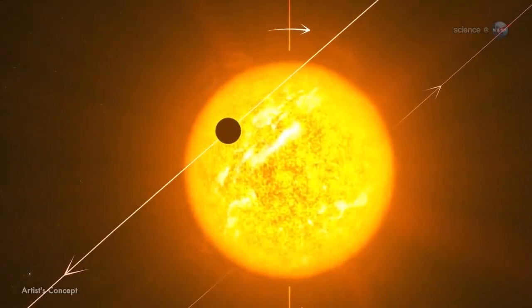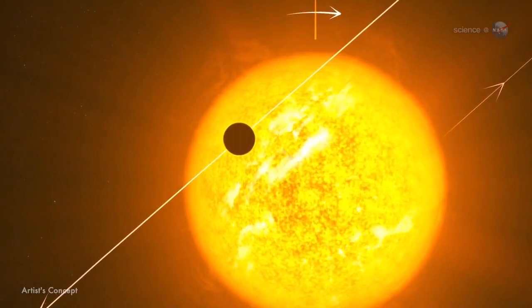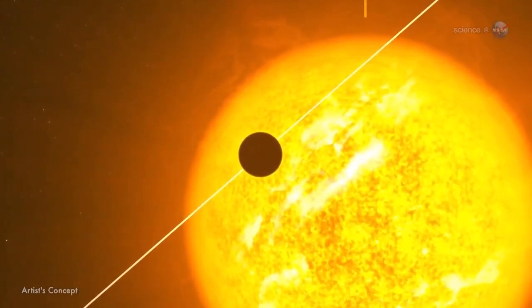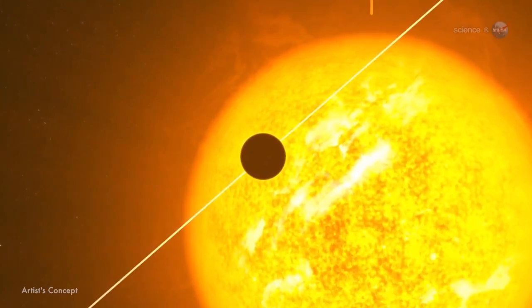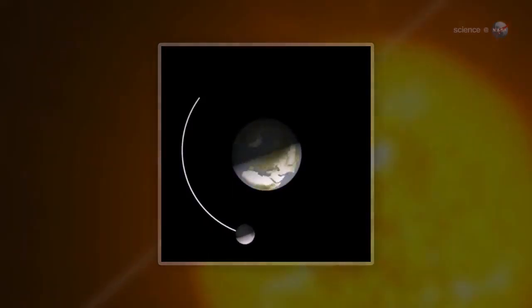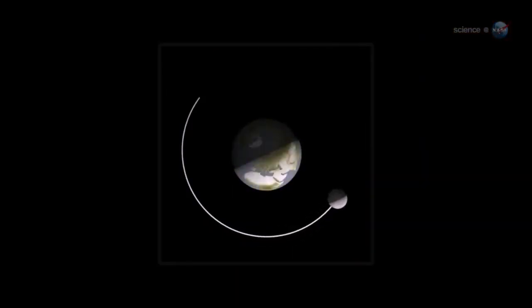Instead, Knudsen and colleagues use a trick dreamed up by Nick Cowan of Northwestern University. The key, she explains, is that most hot Jupiters are tidally locked to their stars, just like the Moon is tidally locked to Earth. This means that they have a permanent day side and a permanent night side. As they orbit, they exhibit phases, again like the Moon.